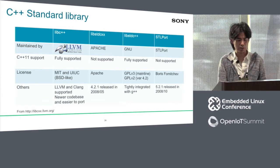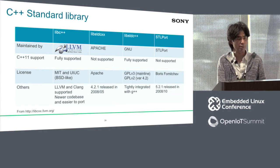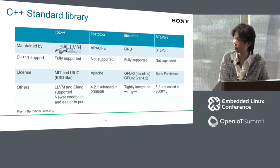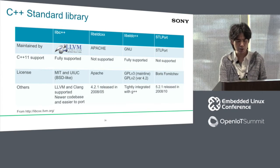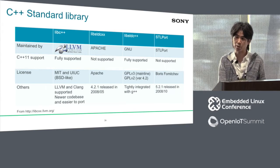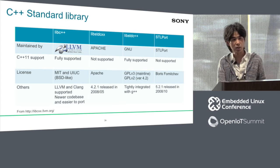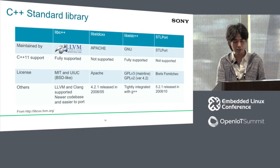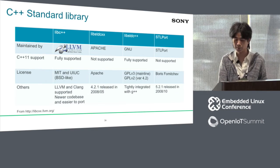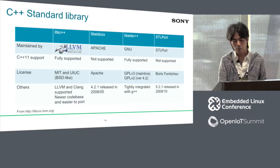The next slide shows the C++ standard library. We are using standard libraries such as std::shared_ptr, std::unique_ptr, and so on. As you can see in this table, there are some open-source C++ standard libraries. Finally, we decided to use libc++ from the LLVM project because C++11 is fully supported, the license is BSD-like, and it's easy to port. We tried STLport before but found it more difficult to support C++11 on our platform.